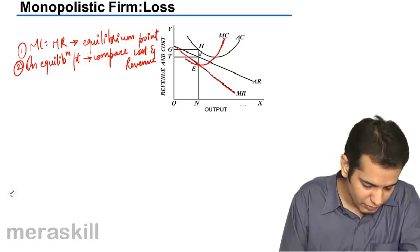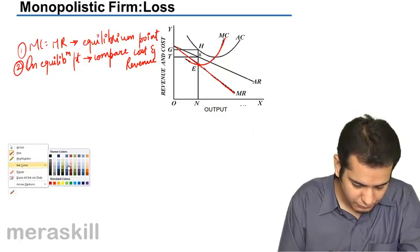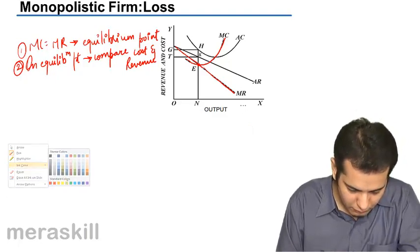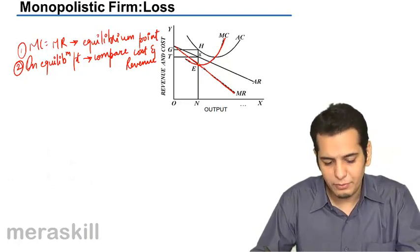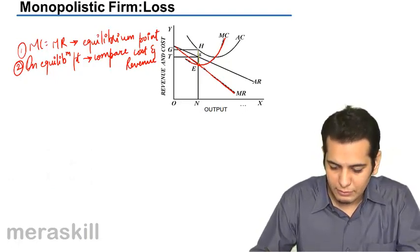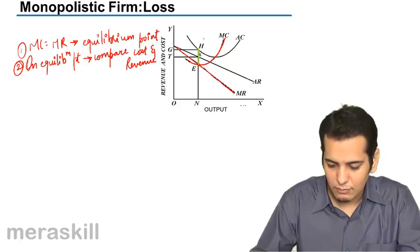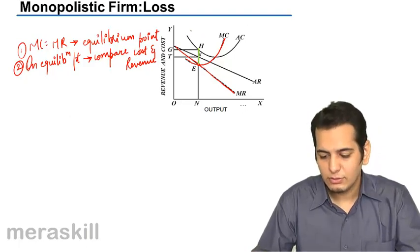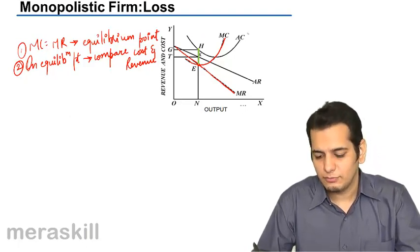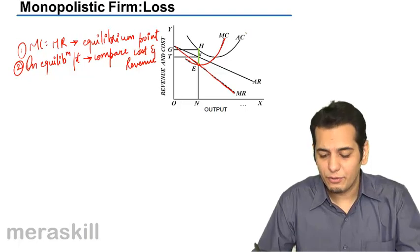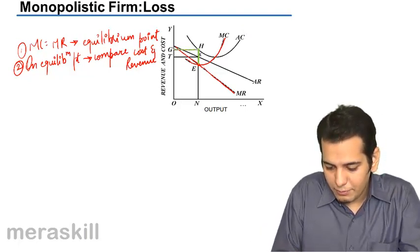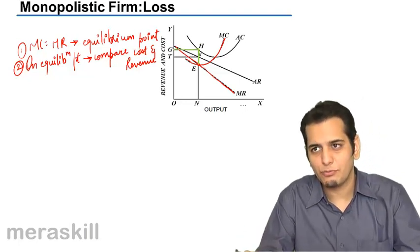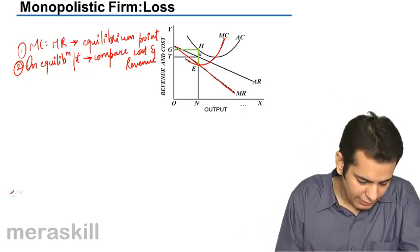Now, from here move up from the equilibrium point, move up till the cost curve, till the point H that is average cost curve. So, you will get your cost curve. You will get your cost. Draw a line perpendicular to Y axis from there.